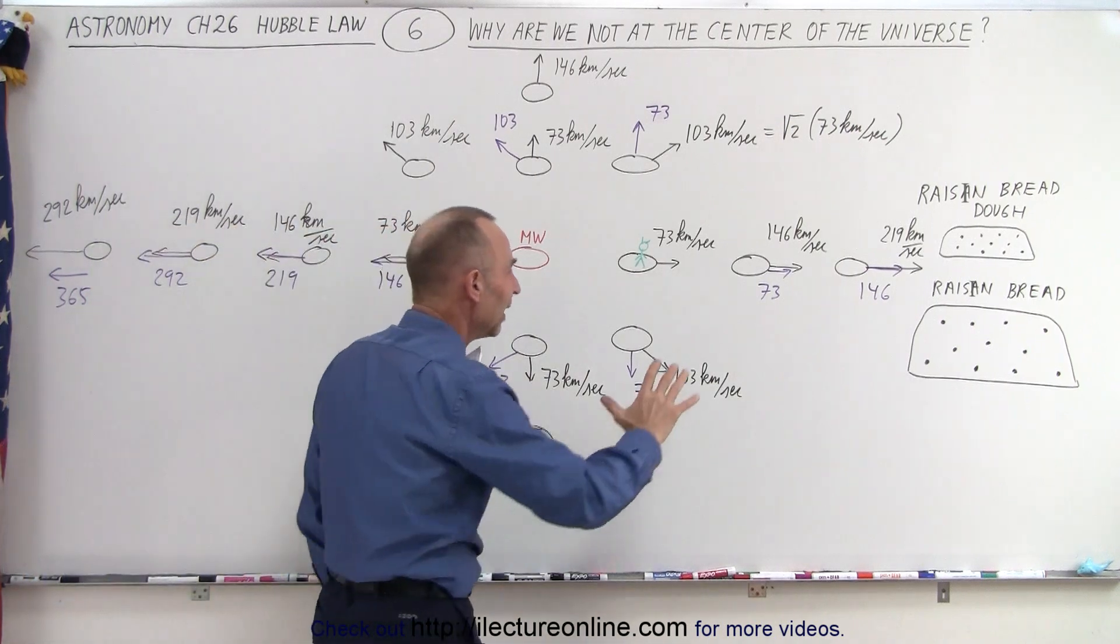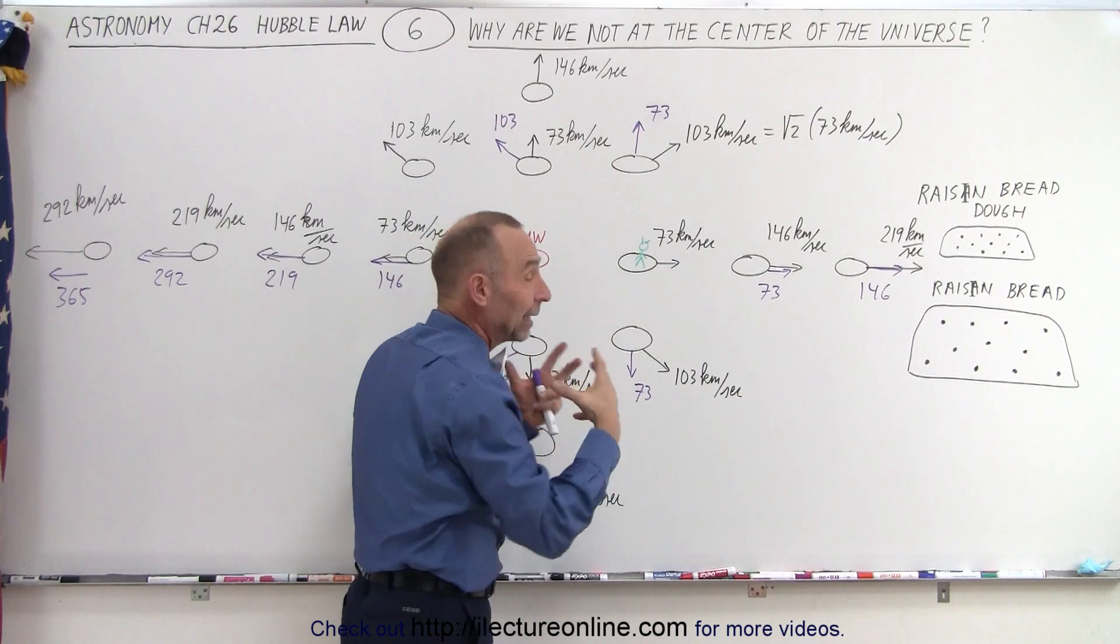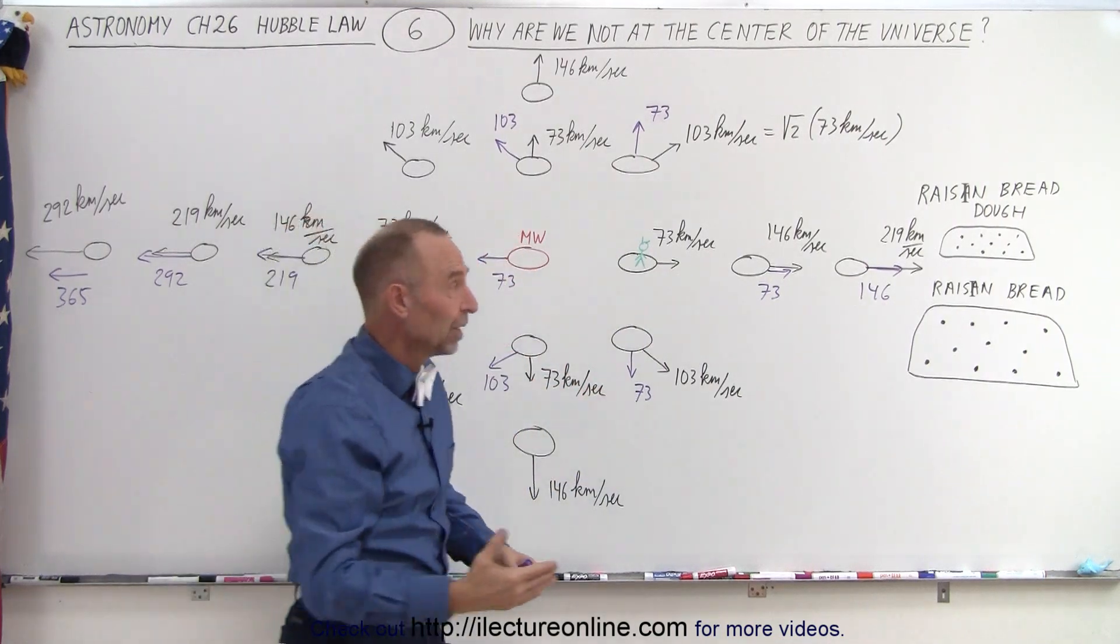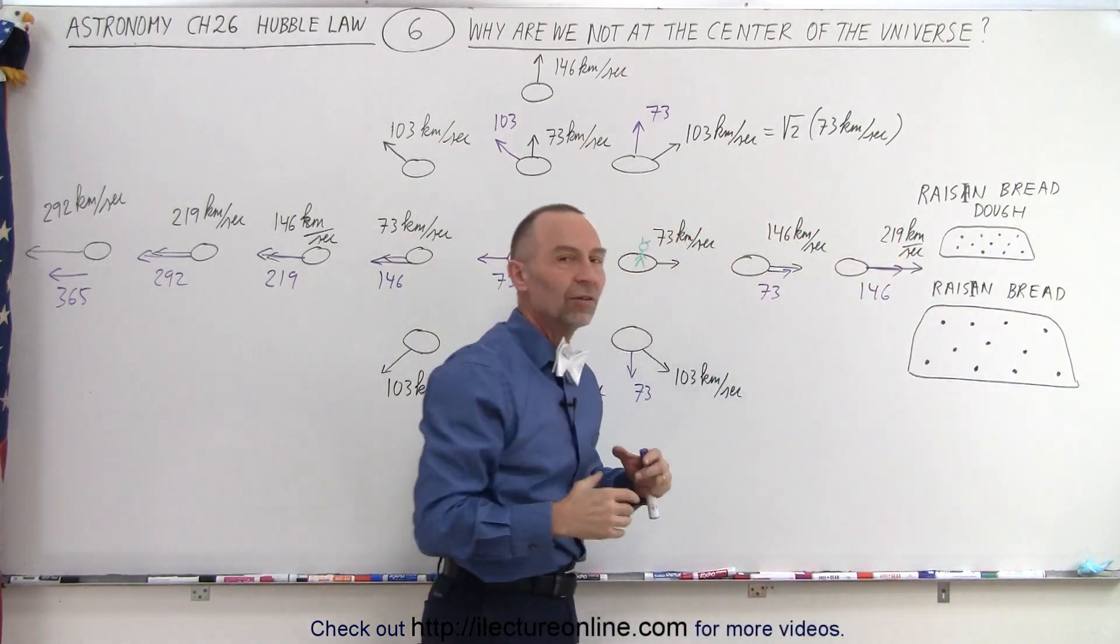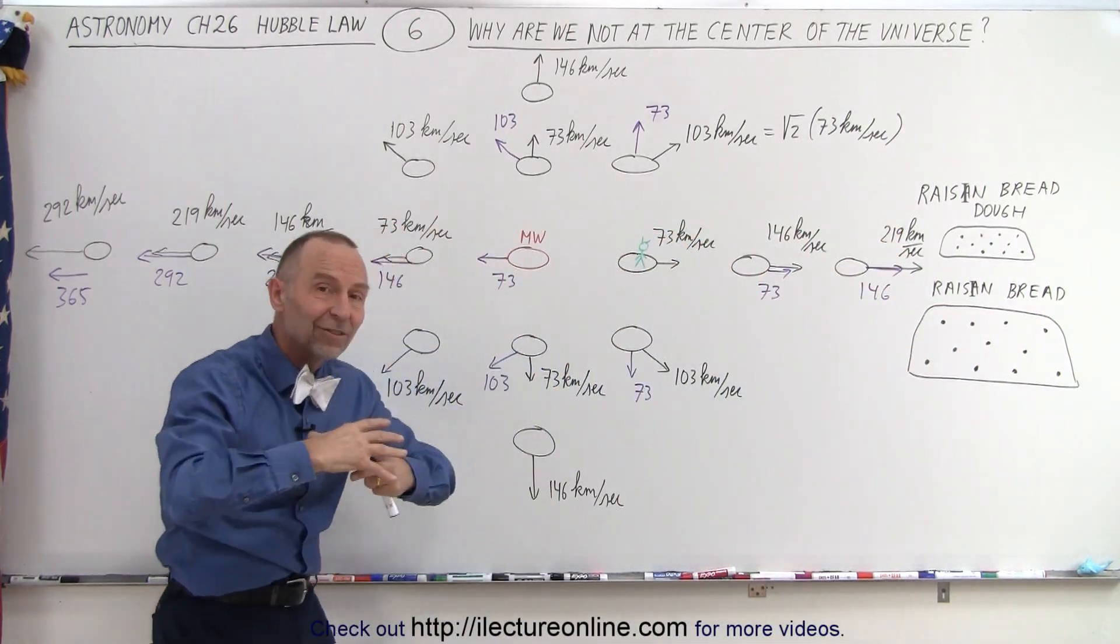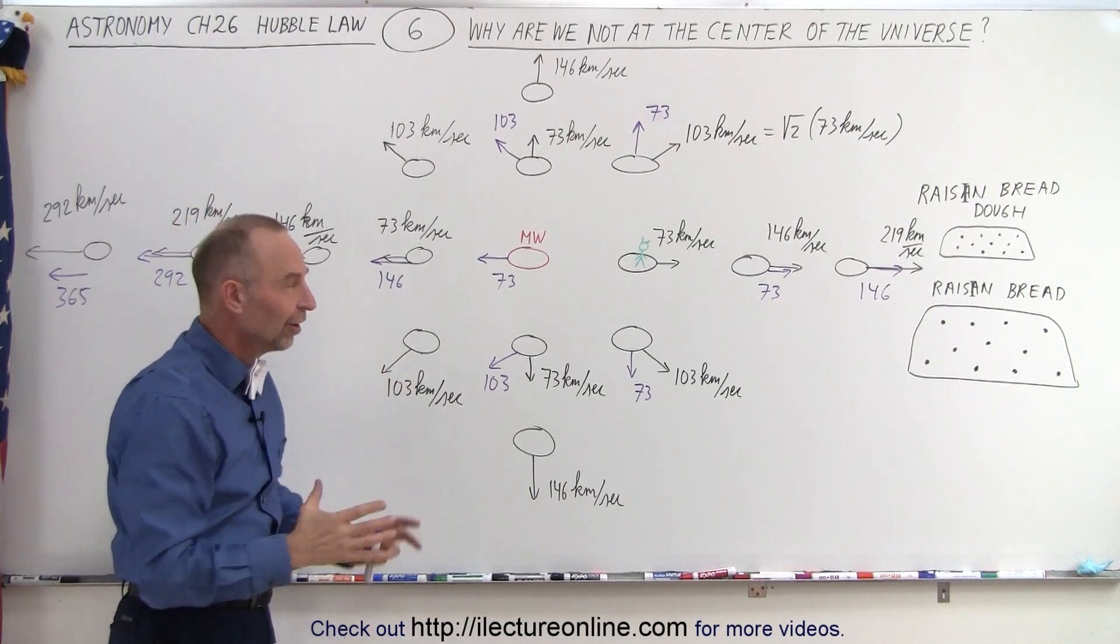So again the analogy that space in between the galaxies is expanding and the galaxies are simply along for the ride. It's just like the raisins are expanding inside the dough, just like the dough is the raisins are along for the ride as the dough itself expands. And that is what's happening in our universe. Space expanding, universe expanding, galaxies going along for the ride, kind of stuck in space.